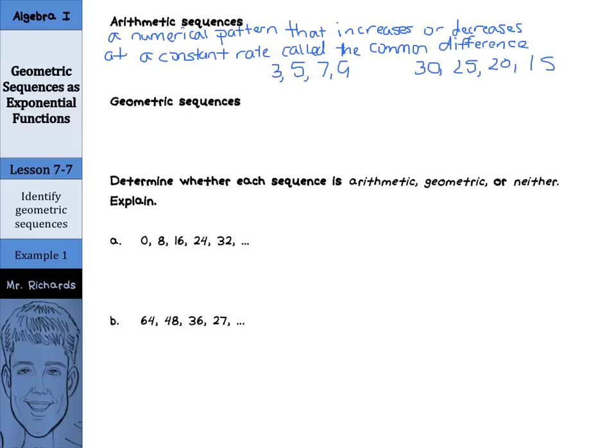An arithmetic sequence is a numerical pattern that increases or decreases at a constant rate called the common difference. Here are two examples of arithmetic sequences. With 3, 5, 7, 9, you can see the pattern of plus 2, plus 2, plus 2, so our common difference is 2. Compare that to 30, 25, 20, 15, where our common difference is minus 5.